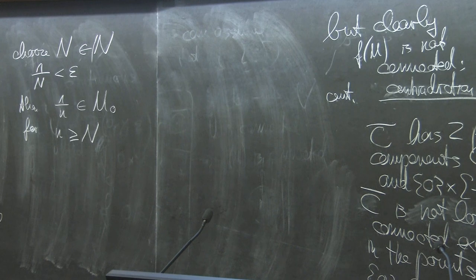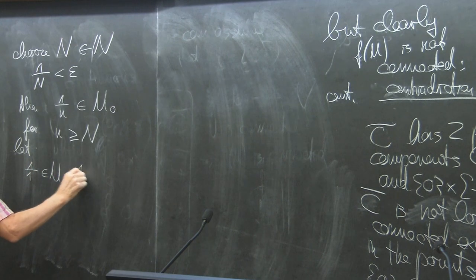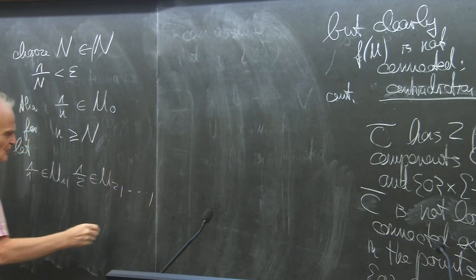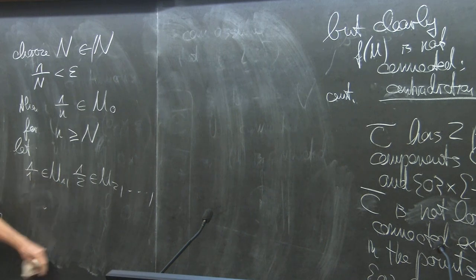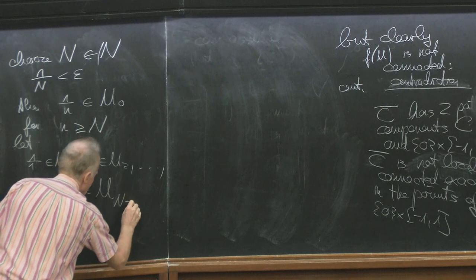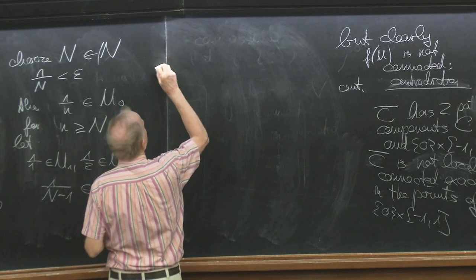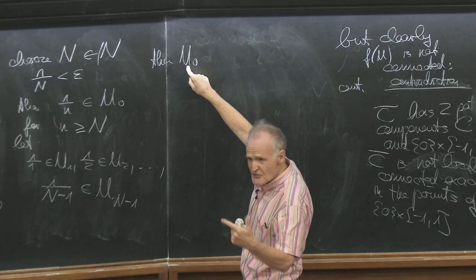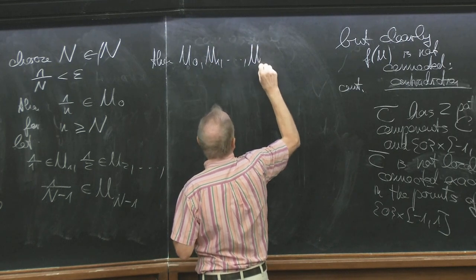Choose N_0 such that 1/N < epsilon for N in the natural numbers. Then 1/n is in U_0 for n ≥ N_0. For the other finitely many points — 1/1, 1/2, ..., 1/(N_0−1) — choose U_1, ..., U_{N_0−1} covering each. Then U_0, U_1, ..., U_{N_0−1} is a finite sub-covering.